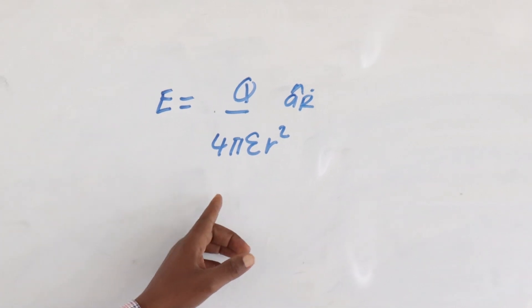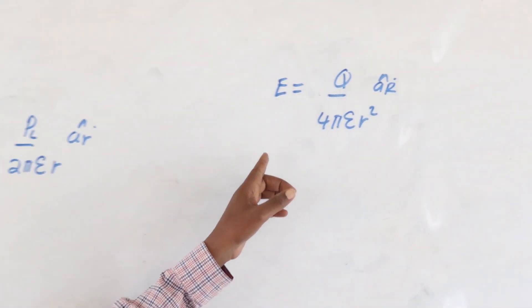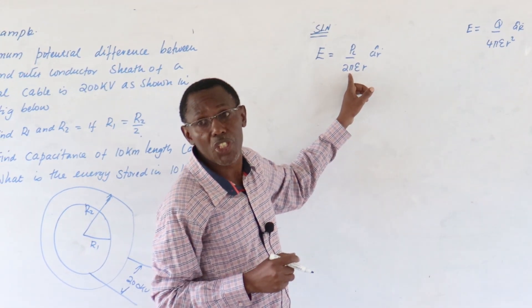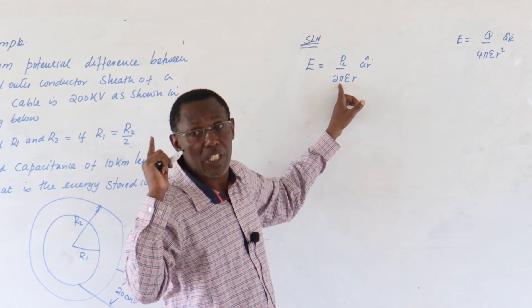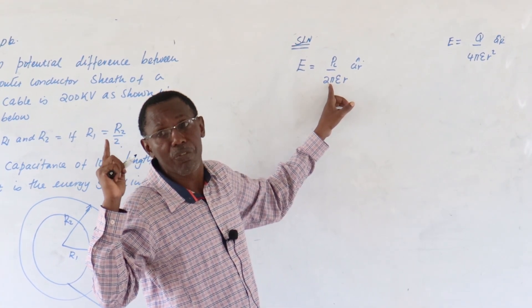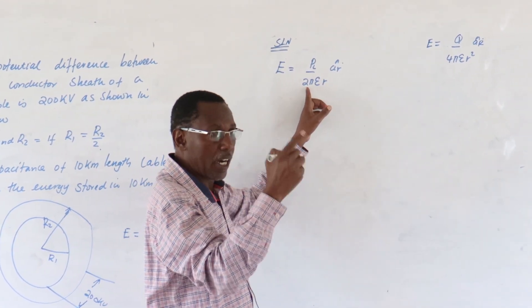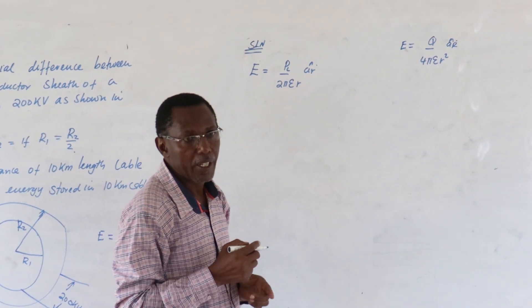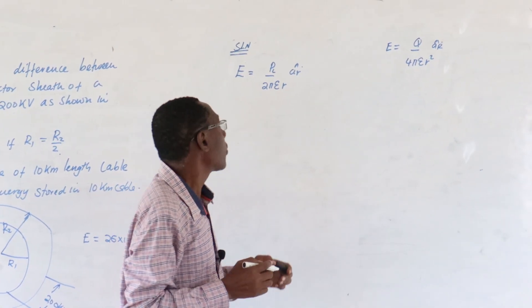We are dealing with continuous charge distribution because the conductor is moving from infinity to a point R. Are we together there?